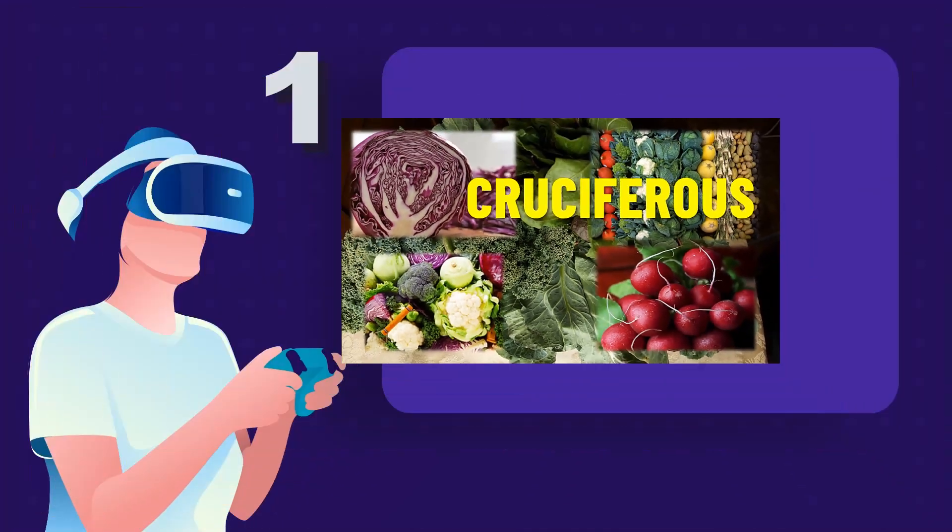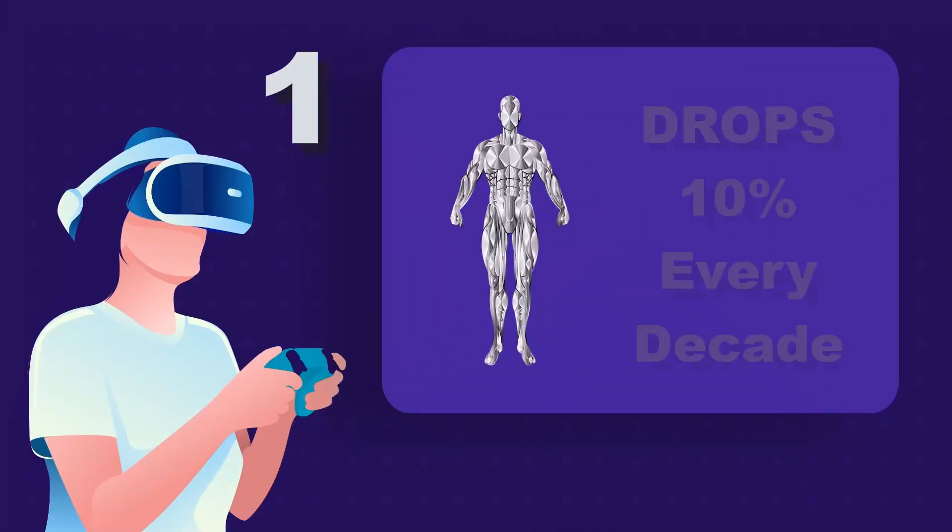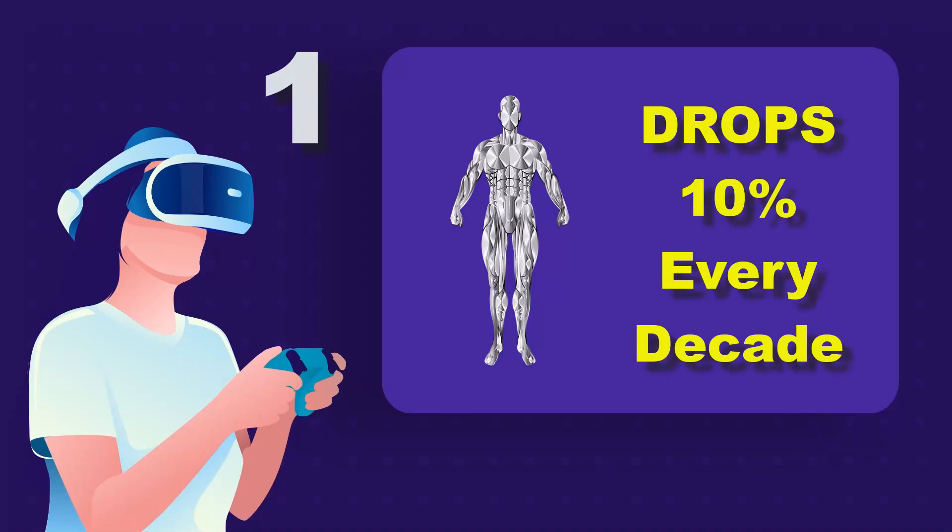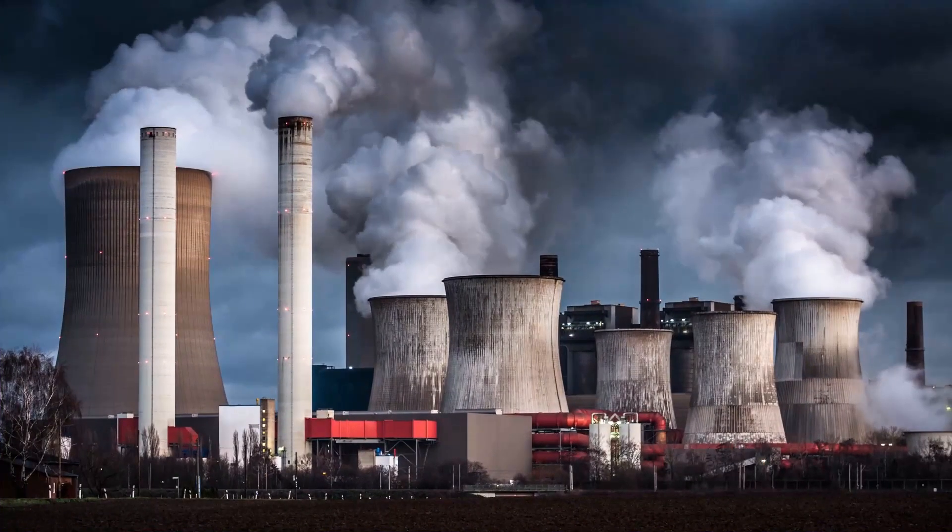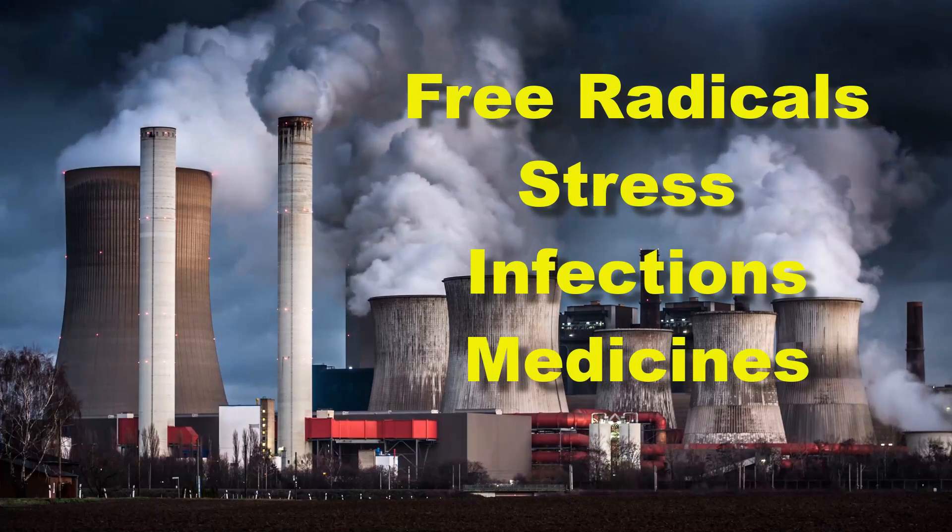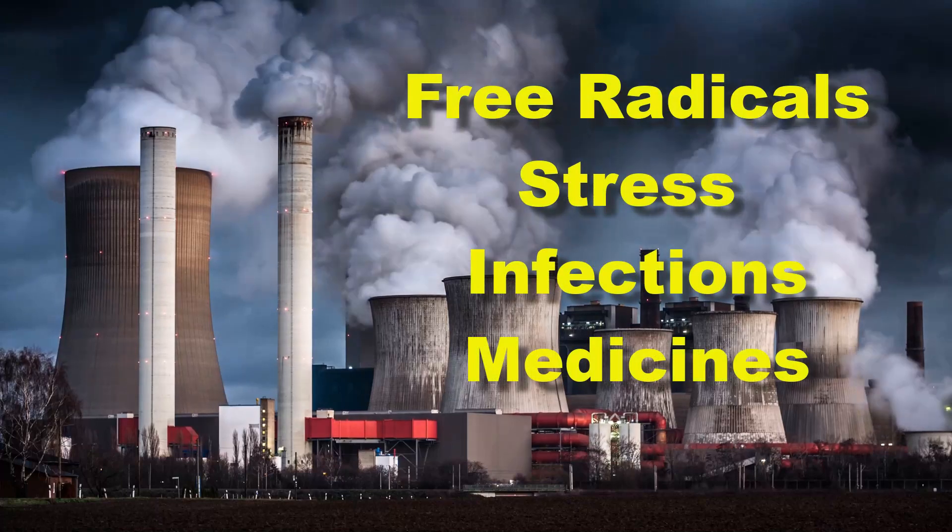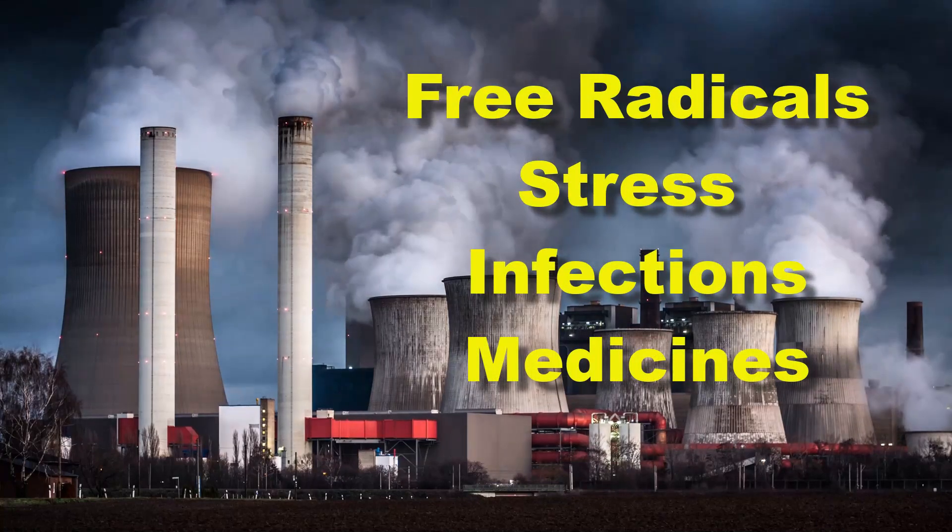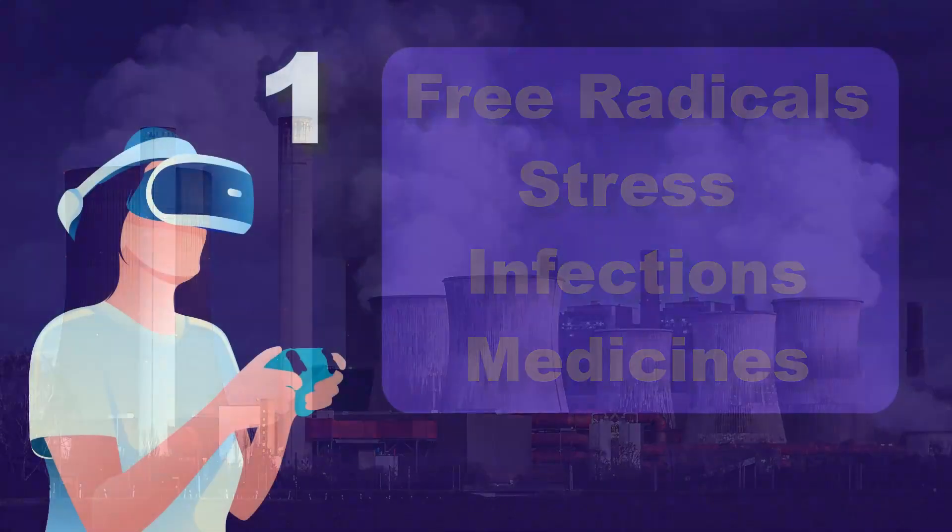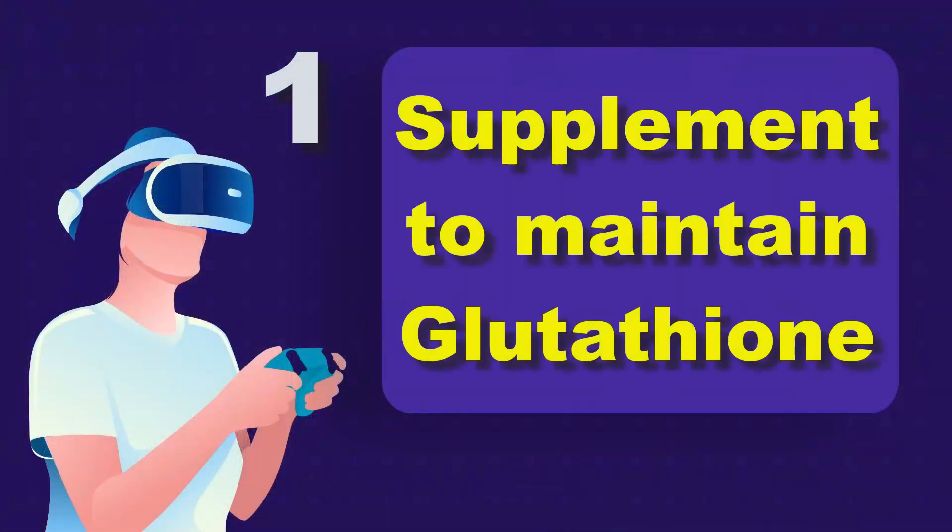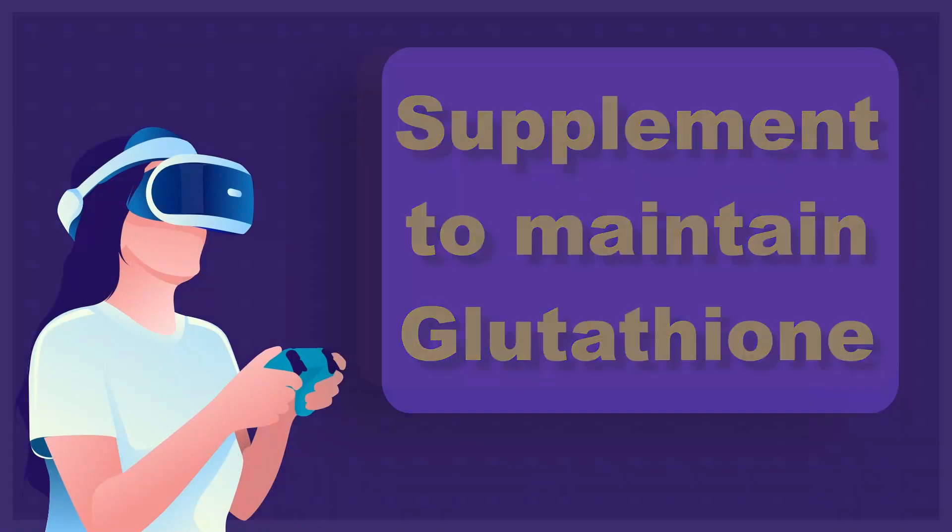But remember, your body's production of glutathione drops by 10% every decade, starting in your 20s. And that doesn't take into account the far greater destruction of glutathione due to pollution, free radicals, stress, infections, medicines, and more. So to provide adequate or even basic levels of glutathione in your body, you'll need to supplement. That brings us to the second source for glutathione.